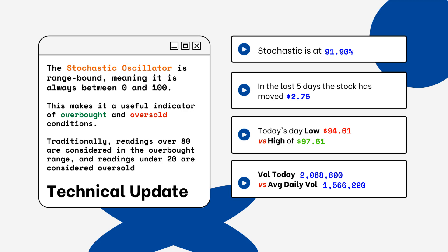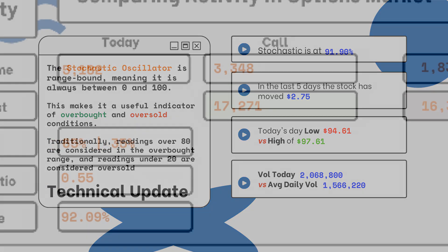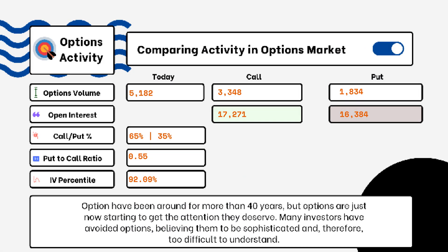We've also provided today's volume of shares traded and also the average daily volume. You want to see how much volume is being traded and if it is above or below the average daily volume level. This tells you how relevant the move is from the stock today.